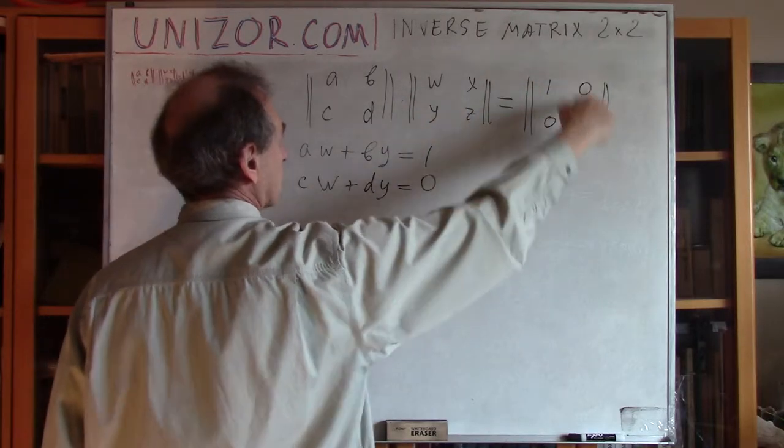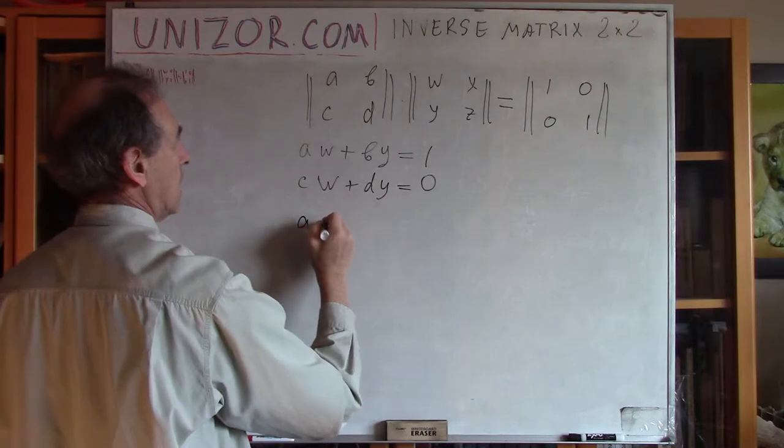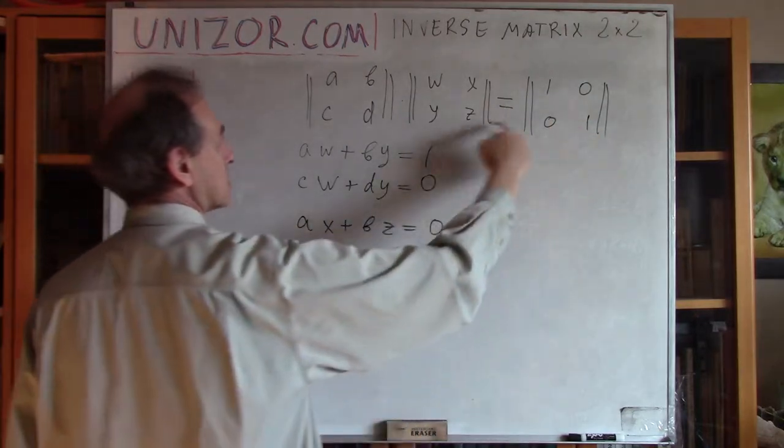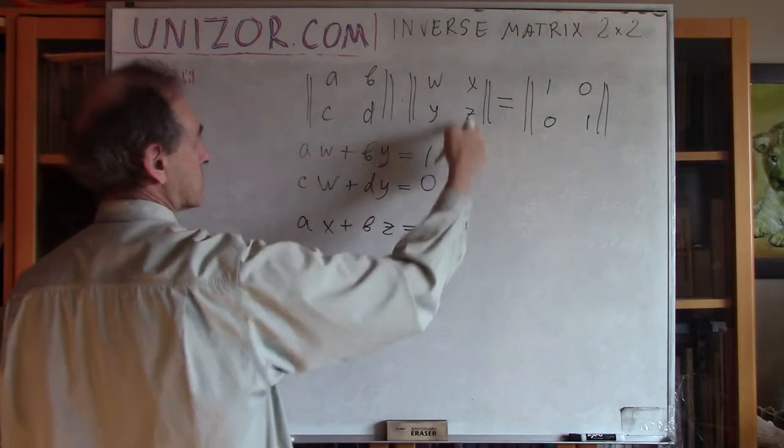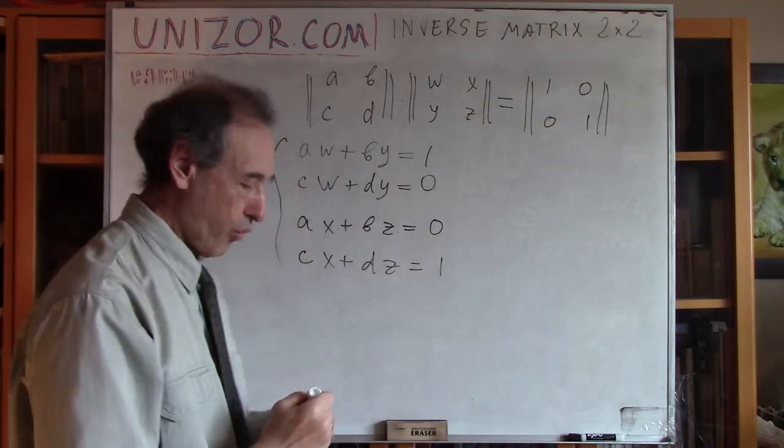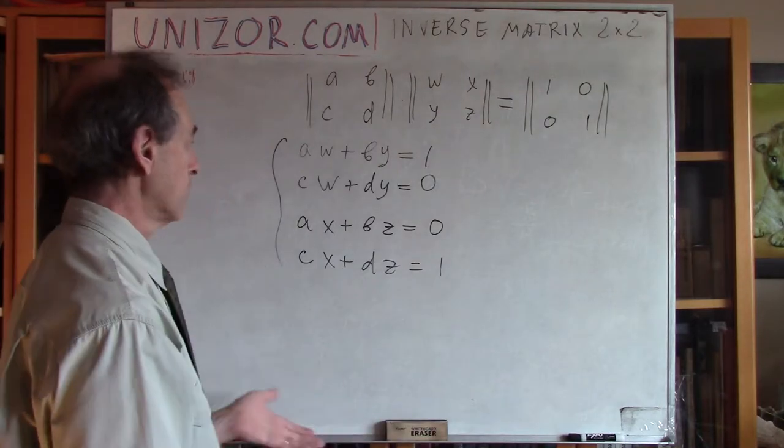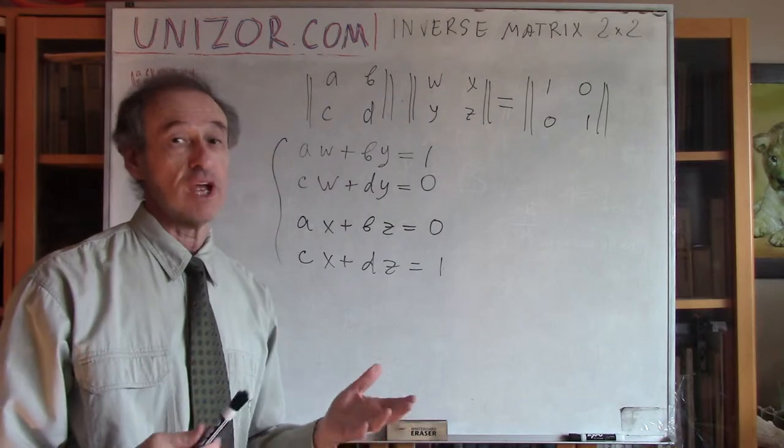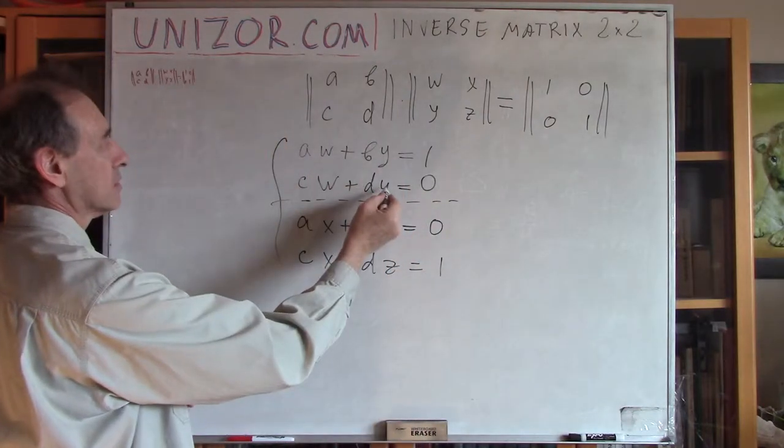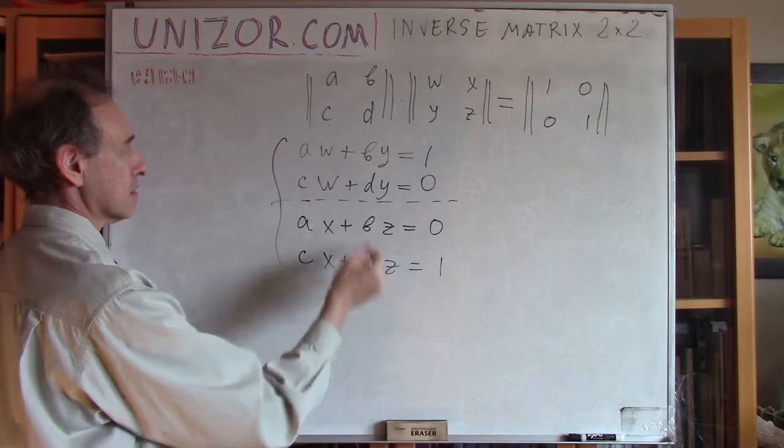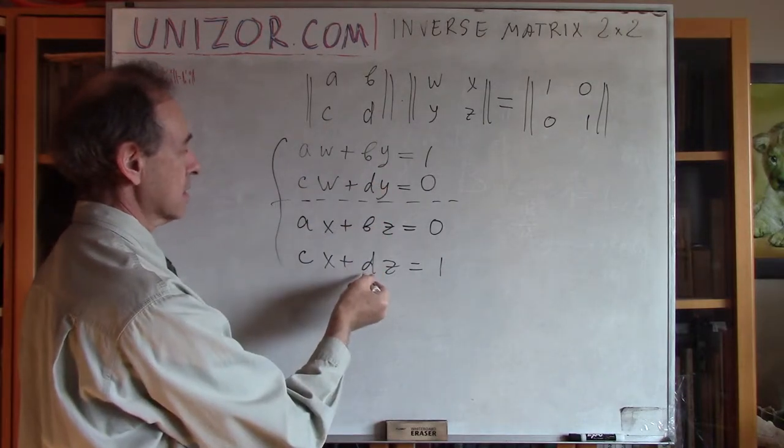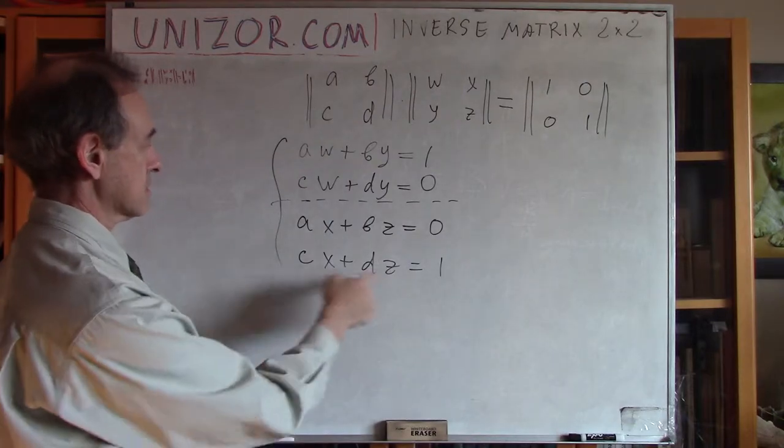Now, this zero. First row, second column. First row, second column. A, X plus B, Z equals zero. And the last one, second row, second column. Second row times second column. C, X plus D, zero equals one. So, this is a system of four linear equations with four unknowns. And actually, it's simpler than generalized system because it actually can be considered as two independent systems.